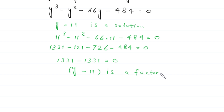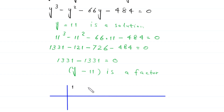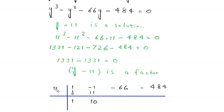To find the other quadratic factor we use synthetic division. We write the coefficients: 1, negative 1, negative 66, and negative 484. Since 11 is a solution we divide by 11. Bringing down: 1 times 11 is 11; negative 1 plus 11 is 10; 10 times 11 is 110; negative 66 plus 110 is 44; 44 times 11 is 484, remainder 0. So the second factor is y squared plus 10y plus 44.